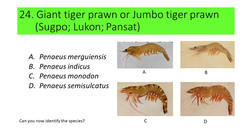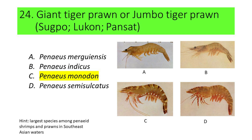Can you now identify the species? If not, here's another hint. This is the largest species among Penaeid shrimps and prawns in Southeast Asian waters. If your answer is C or Penaeus monodon, you're correct. Penaeus monodon is commonly called giant tiger prawn or jumbo tiger prawn.